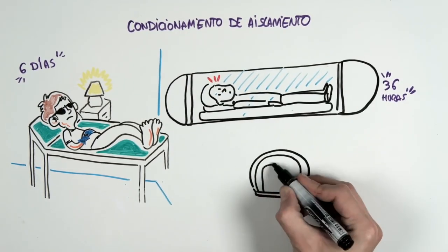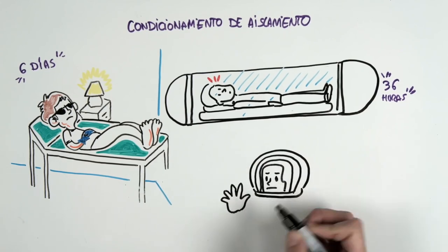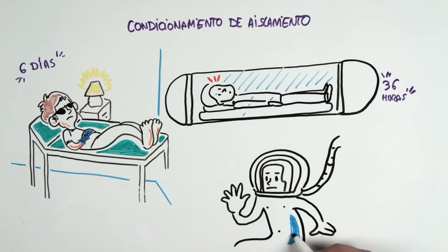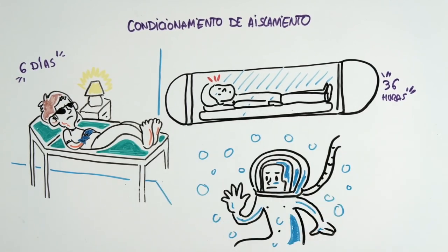Finally, the third condition leads the volunteer to submerge naked in a water tank. He wears a mask that allows him to breathe but does not see or hear anything, and remains that way until he can no longer resist it.